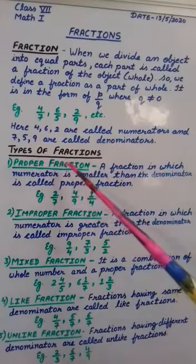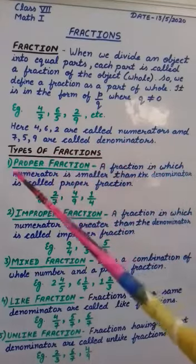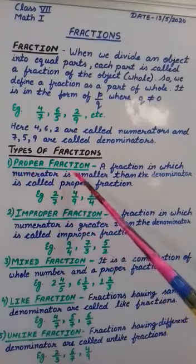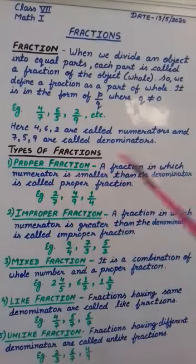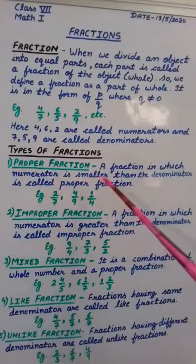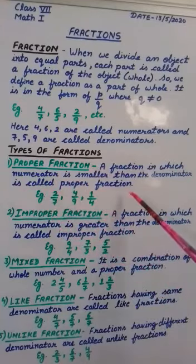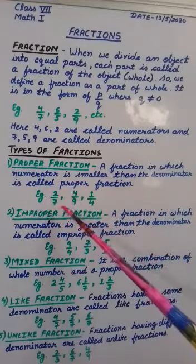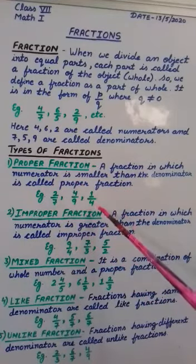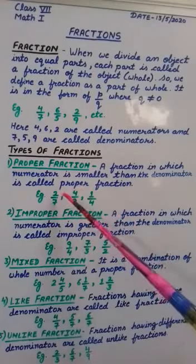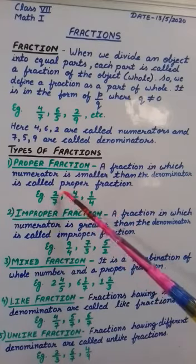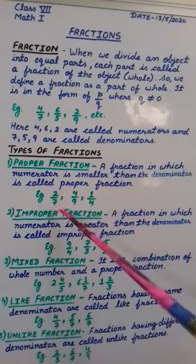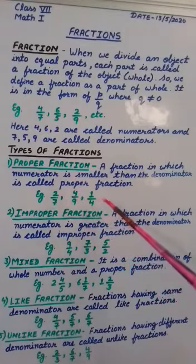Now let's come to types of fractions. Number 1: we have proper fraction. A fraction in which the numerator is smaller than the denominator is called a proper fraction. Some examples are: 2 by 7, 4 by 9, 1 by 4. All these are proper fractions, as we can see that the numerator is smaller than the denominator. That's why it's a proper fraction.